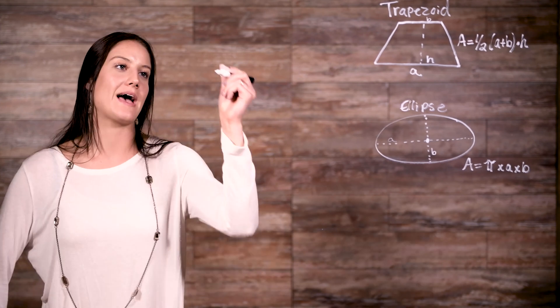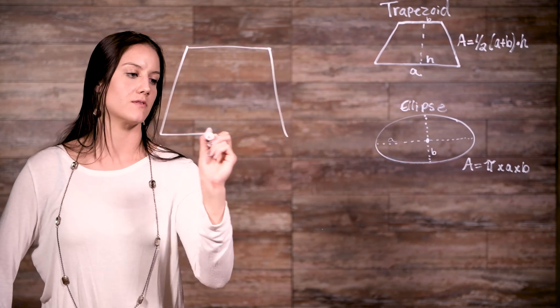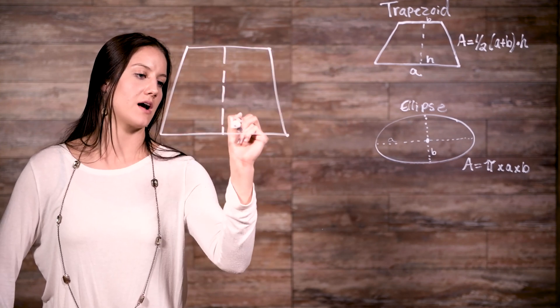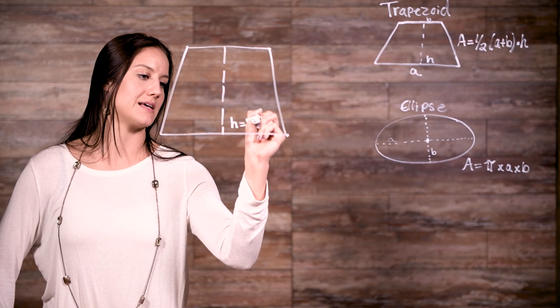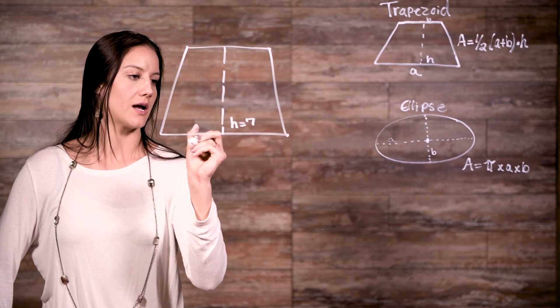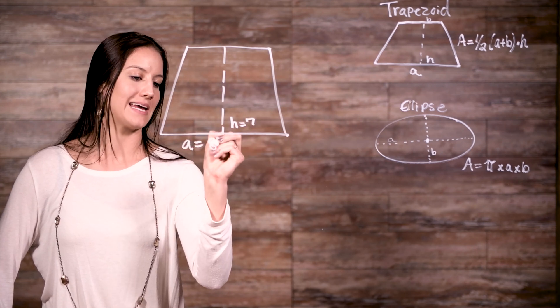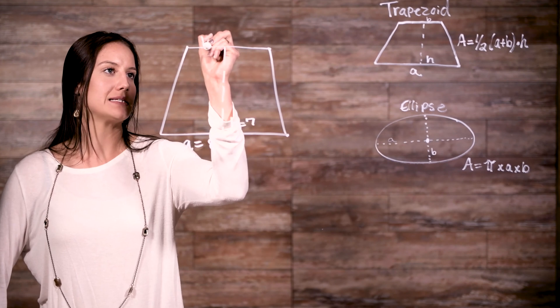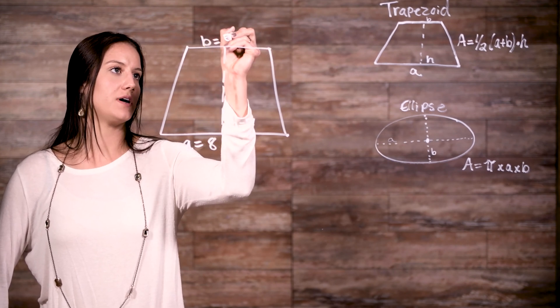Now let's say we have a trapezoid, and let's say that our height is equal to 7, our a side is equal to 8, and our b side is equal to 5.